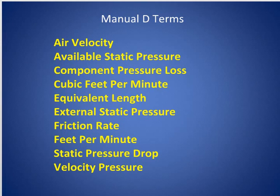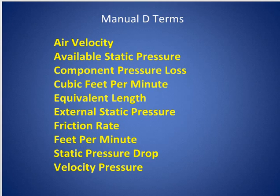Manual D terms. These terms are important — when I use them I want you to pay attention, because by the end of this course you'll need to be able to define them and understand how they work in order to do a duct design. The key terms are: air velocity, available static pressure, component pressure loss, cubic feet per minute (CFM), equivalent length, external static pressure, friction rate, feet per minute, static pressure drop, and velocity pressure. Don't worry if you can't recall them all right now — by the end of the course you'll have them, and I'm going to repeat them several times.